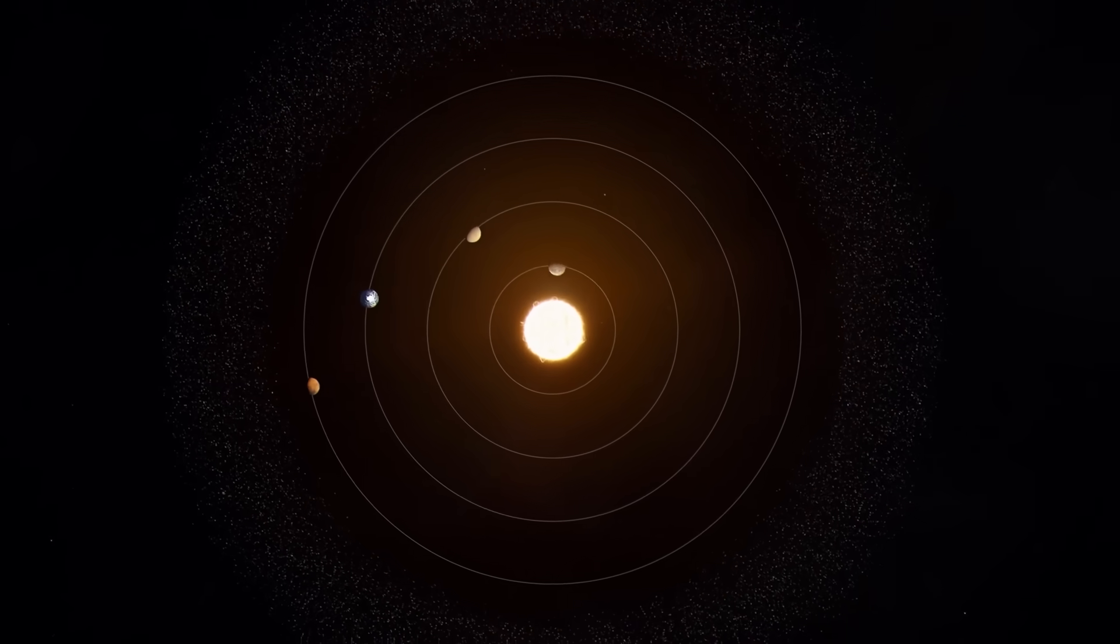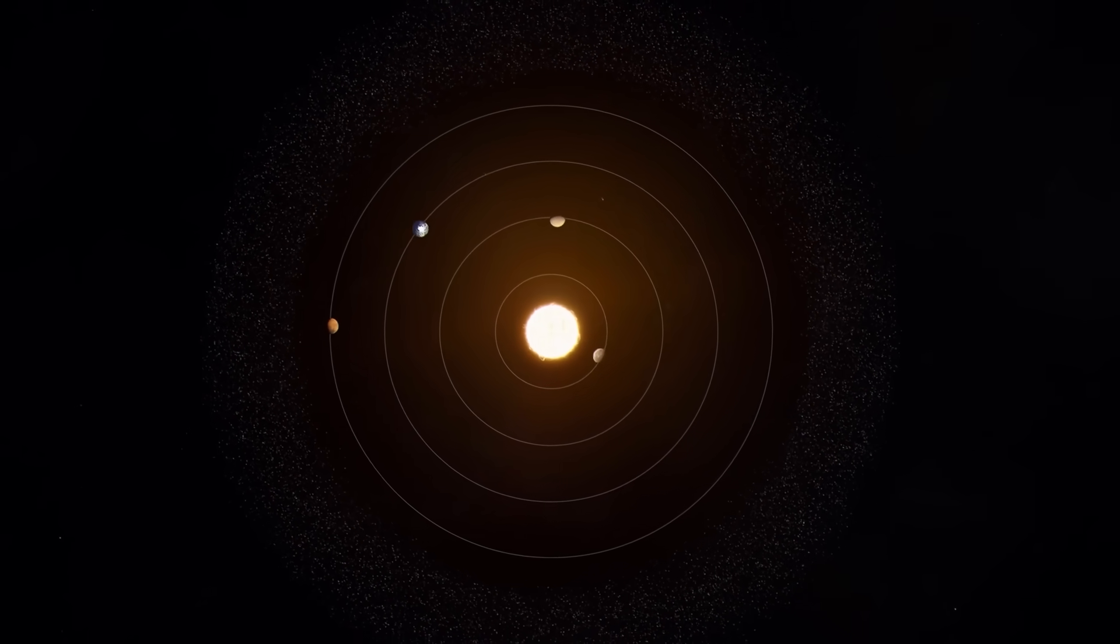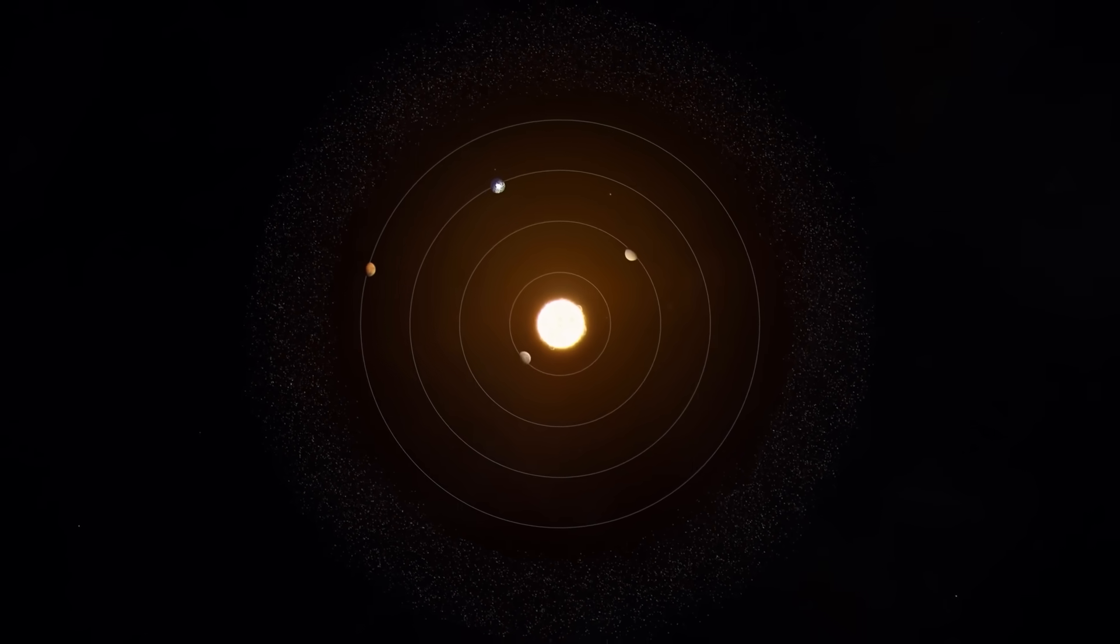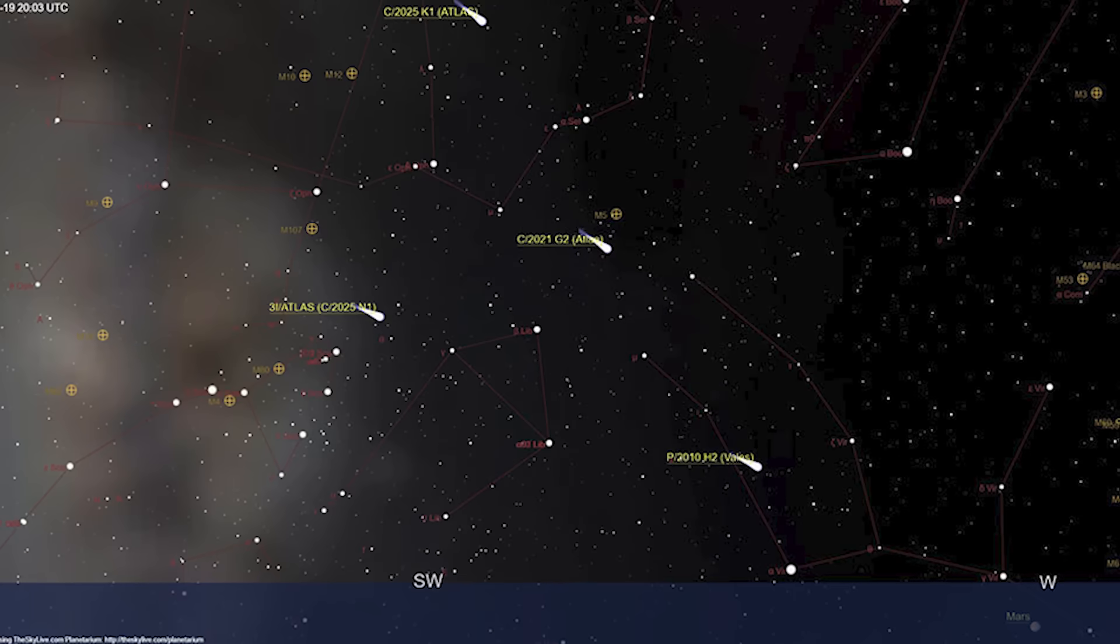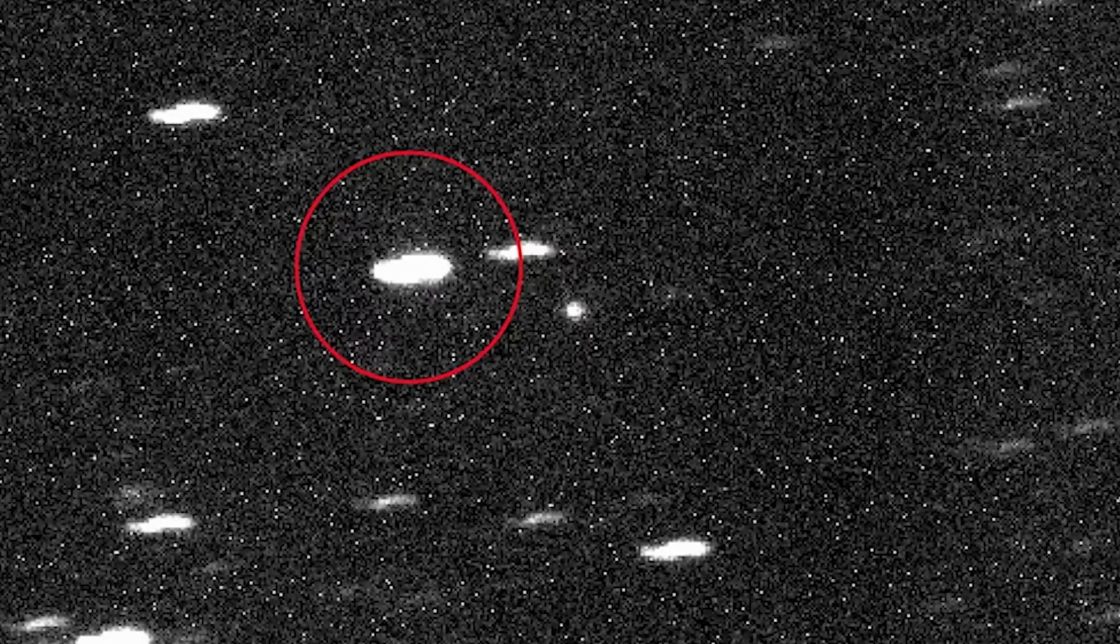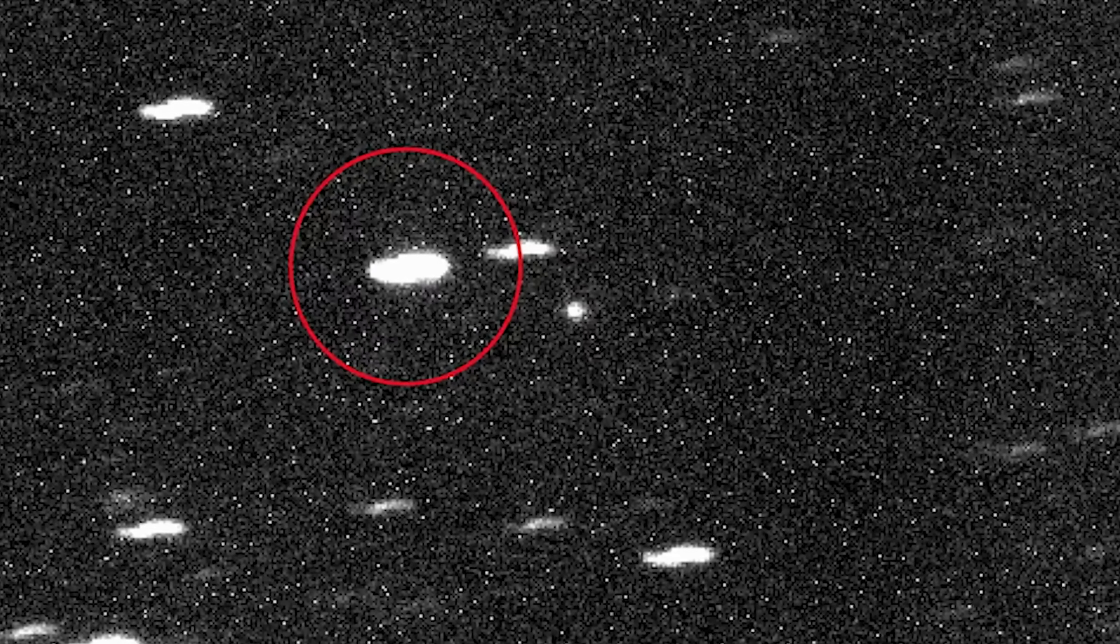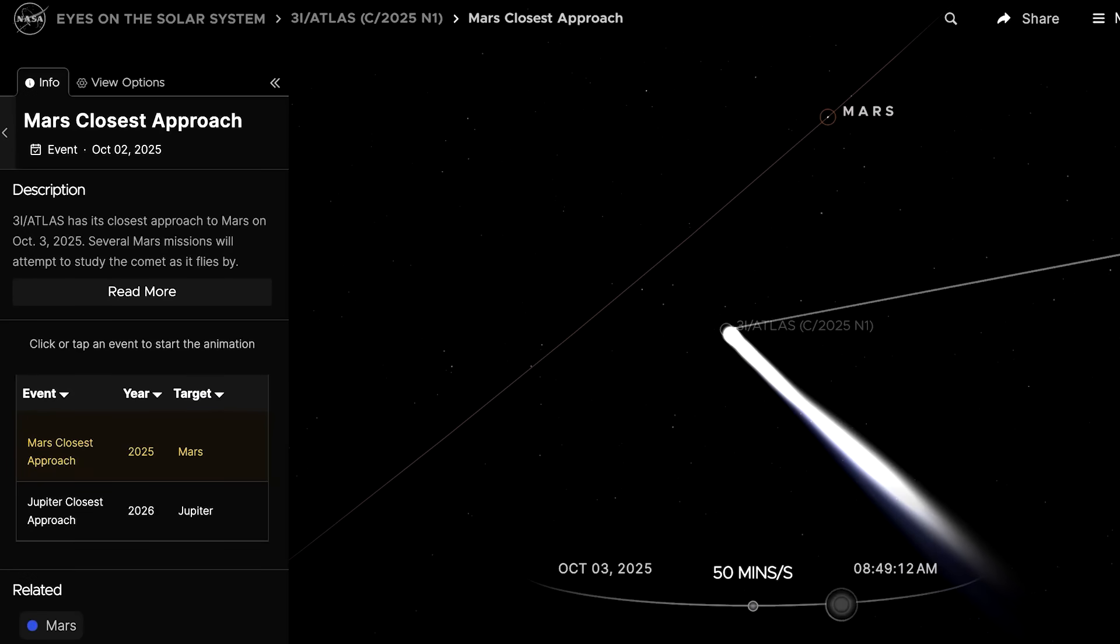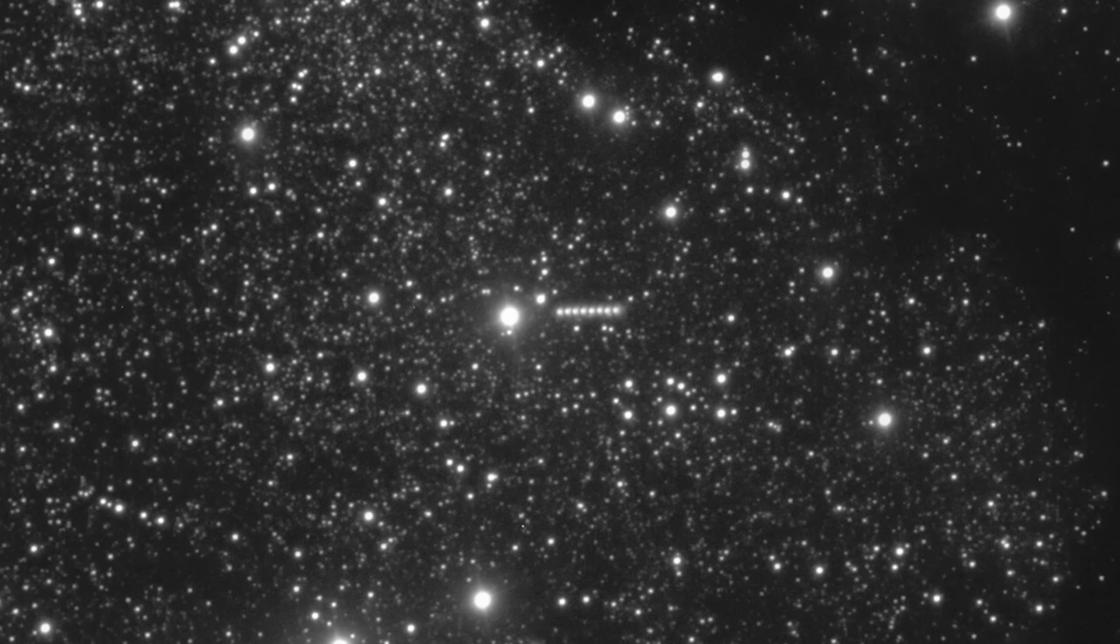Within days, orbital calculations confirmed that it was not bound to the sun's gravity at all. Its path was open-ended, hyperbolic. It had come from outside the solar system, would pass through once, and disappear forever. The object was officially named 3i Atlas, the third interstellar visitor ever observed.